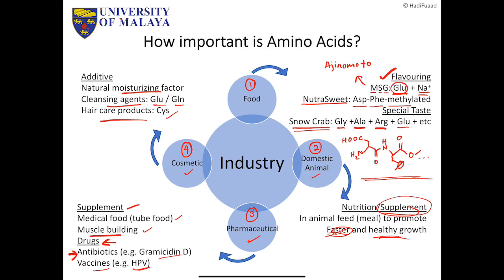The last industry is cosmetics, where you have natural moisturizers, cleaning agents using glutamic acid or glutamine, and hair care products such as cysteine. Amino acid is very important in our current daily life. If you were to rely solely on extraction from biological processes, you wouldn't have enough for everyone worldwide — so you need a way to synthesize them chemically.